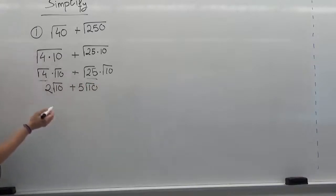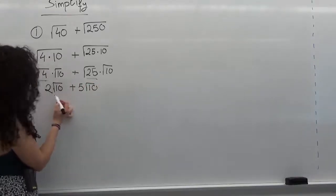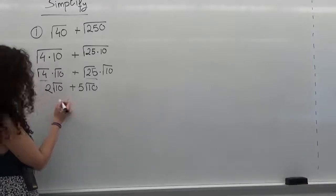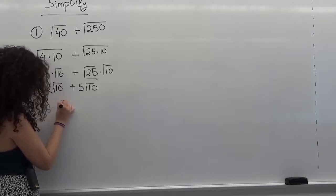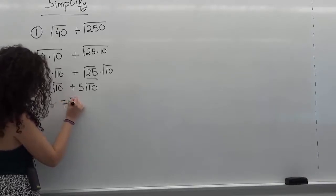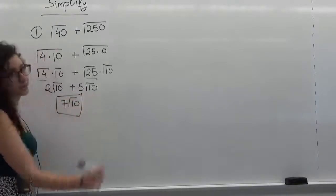Since these two numbers are multiplied by the same radical, I can add them up together. So I can say that this is equal to 7 radical of 10. And this will be our answer. Thank you.